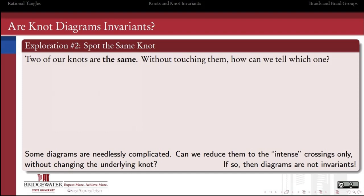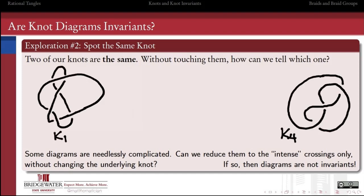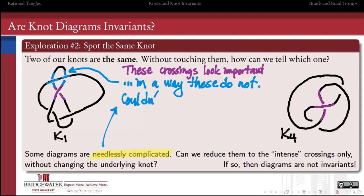Let's take a look at two more of our knots from this list, and let's figure out whether these two knots are or are not the same. I'm going to pick on K1 and K4. On the surface, it would seem like these two diagrams are quite different, but is there a chance that they might represent the same knot? Let's zero in on some of the crossings. Maybe this little X-shaped crossing here and this little X-shaped crossing there. It seems like those two crossings, highlighted in purple, are pretty important to the structure and identity of each of these knots. But there are some other crossings that don't seem like they're as important.